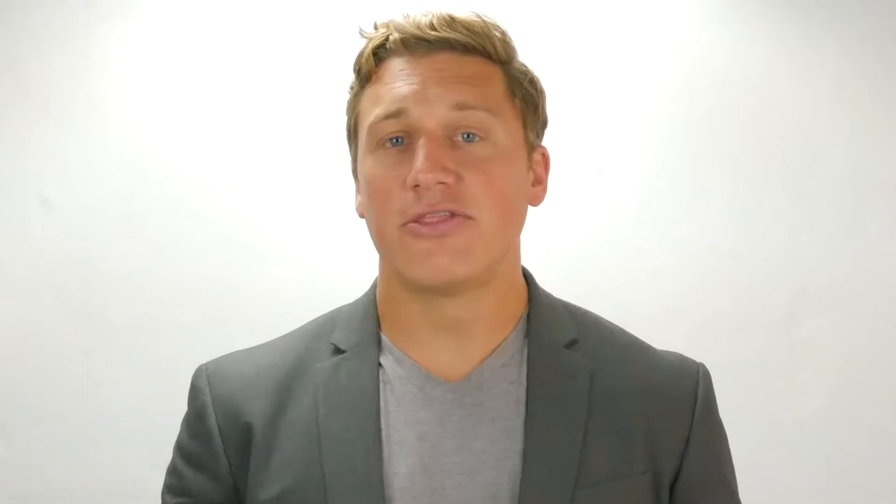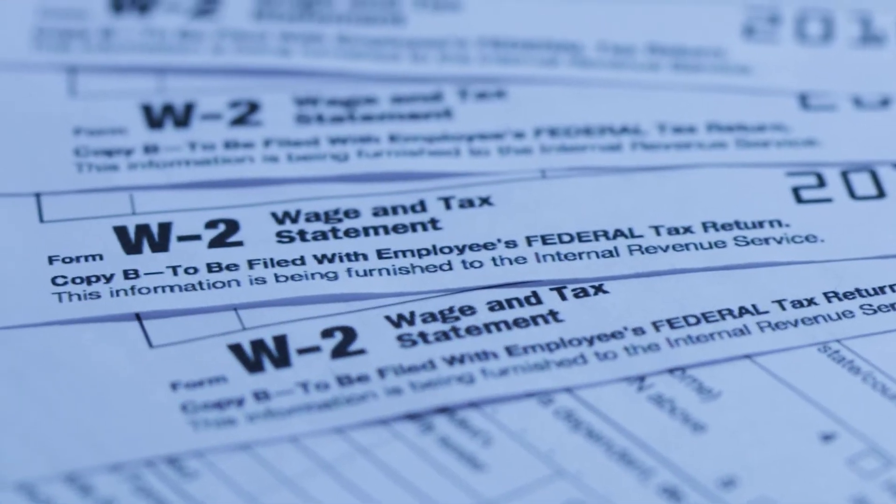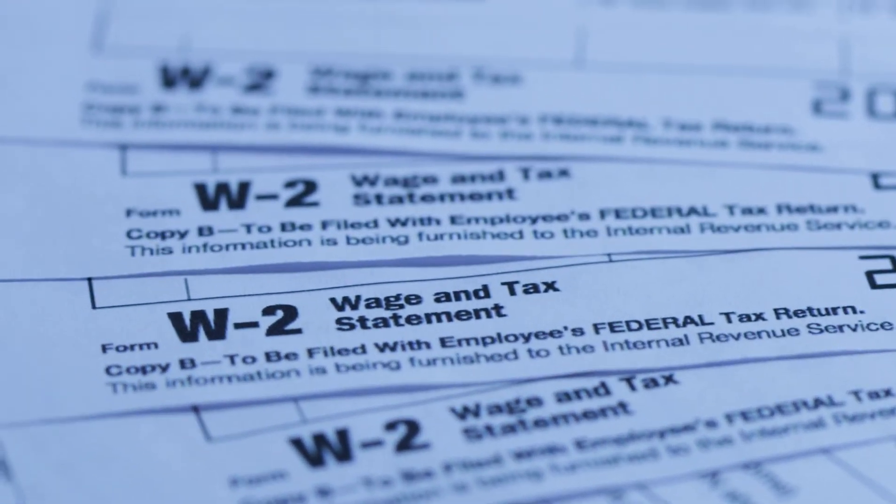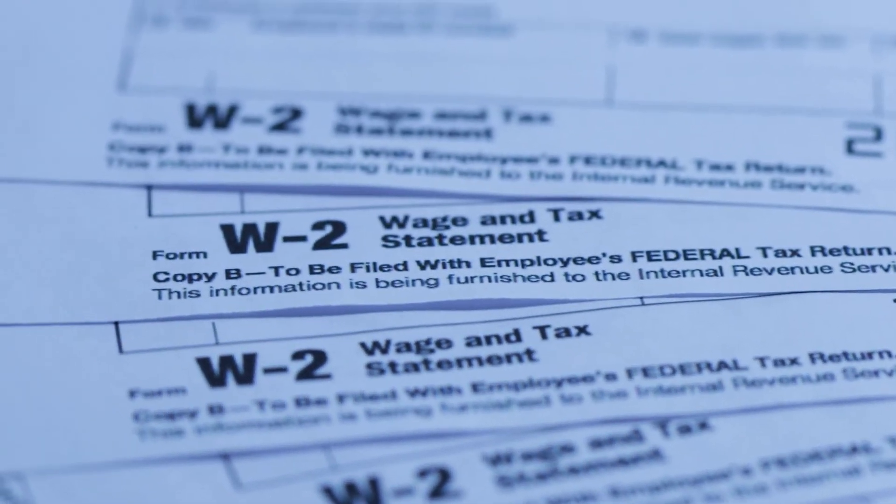The Form 1099 Miscellaneous is an IRS form dedicated to non-employee compensation. If you aren't receiving a W-2, you're an independent contractor or a freelancer, and you'll need to file this form to report your income.